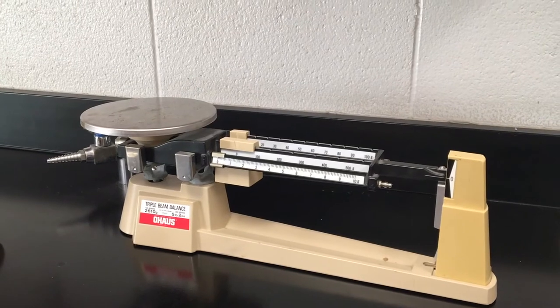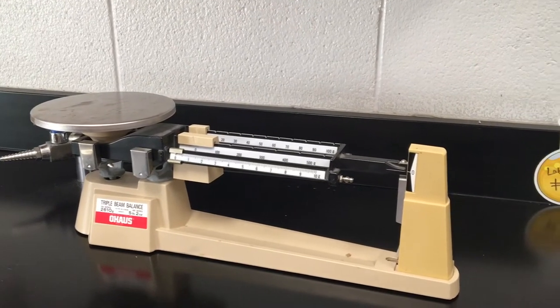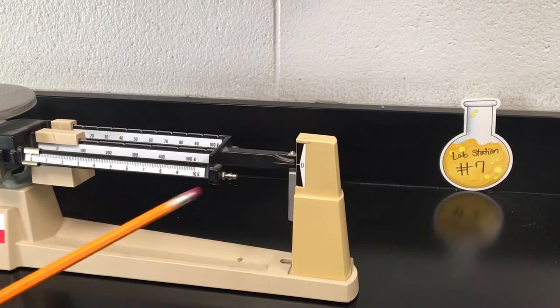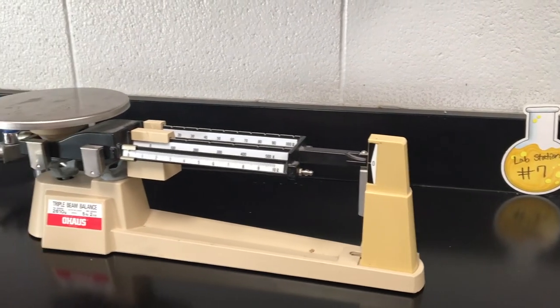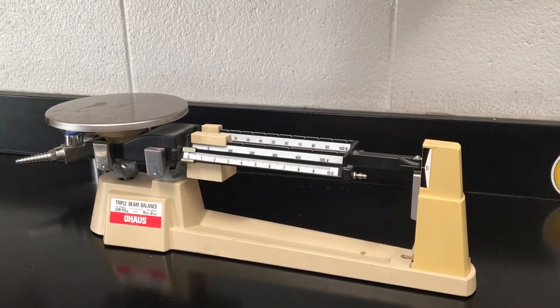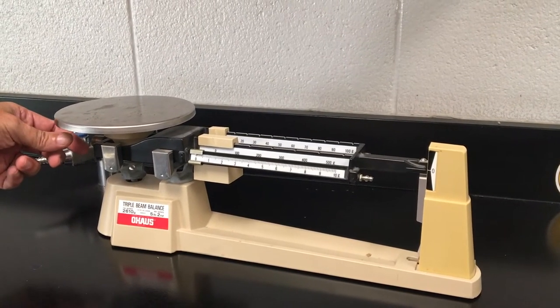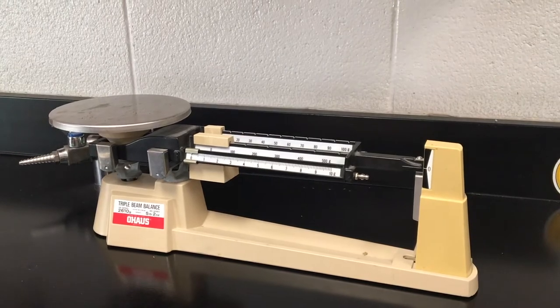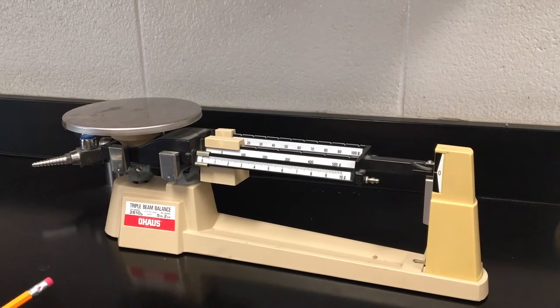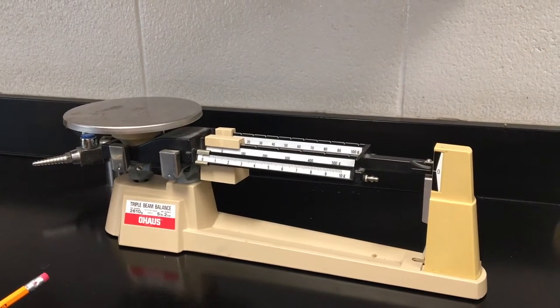Before we get started, we always want to make sure that our balance is zeroed, that the line matches up. For your purposes, we're going to try to have them zeroed beforehand, but if you ever need to adjust it, by turning this dial gently to get the zero to line up. But again, for your purposes, we're going to try to have these zeroed up for you in advance.